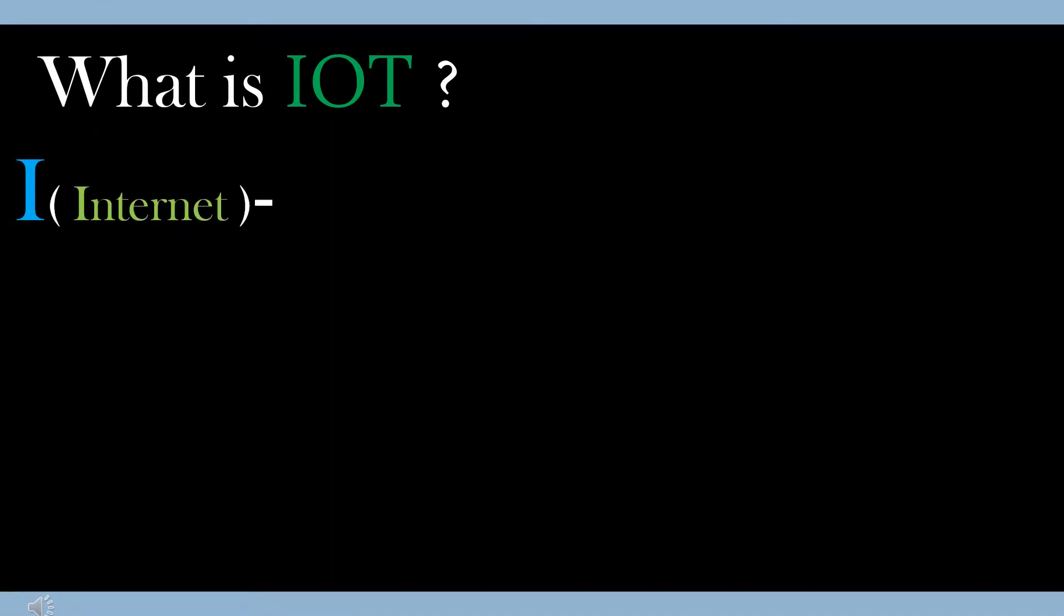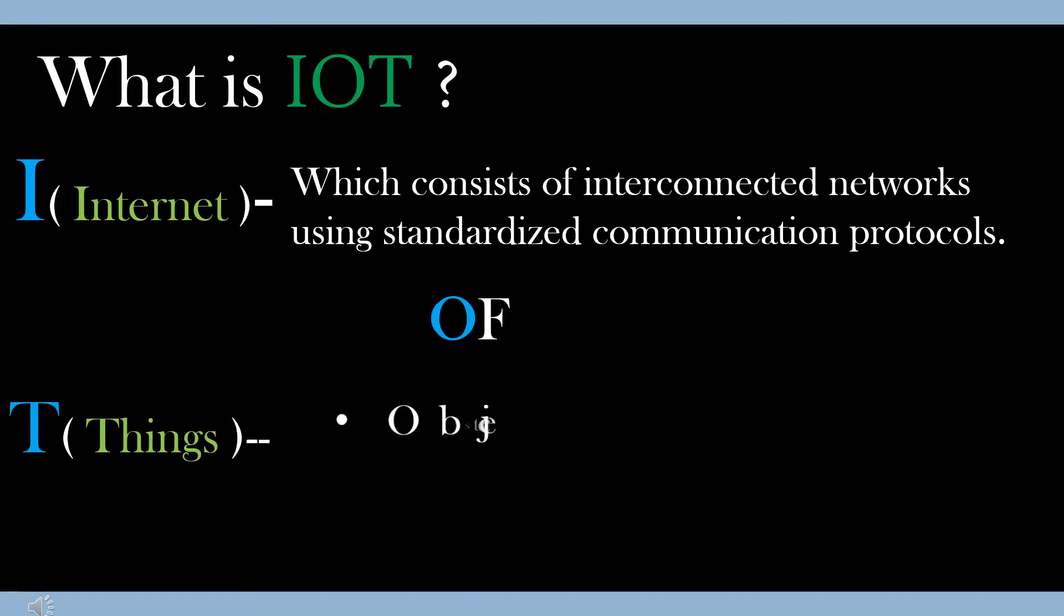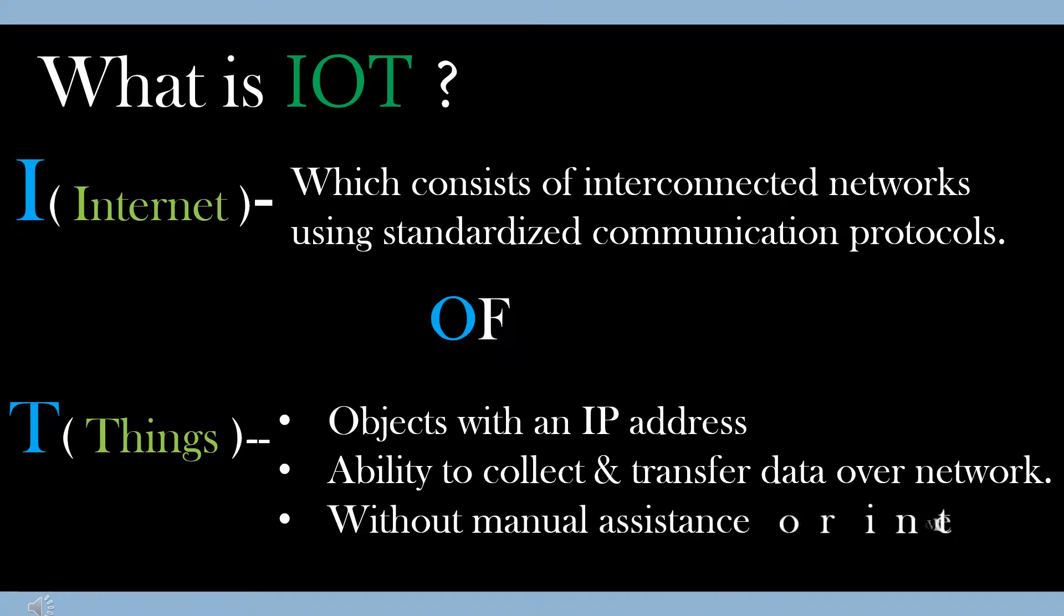I, Internet, which consists of interconnected networks using standardized communication protocols. T, things, generally thing is nothing but an object. But whereas in IoT, it might be a person or automobile with a specific IP address which have the ability to collect and transfer the data over a network without any manual assistance or intervention.